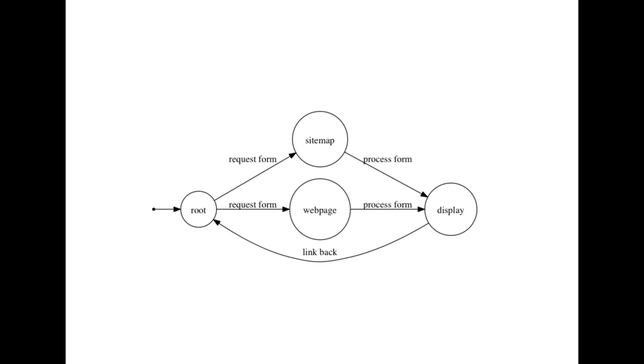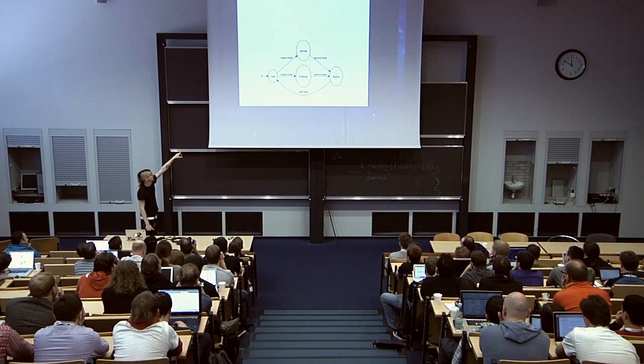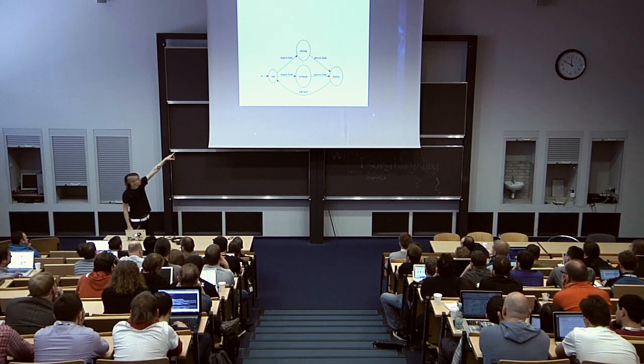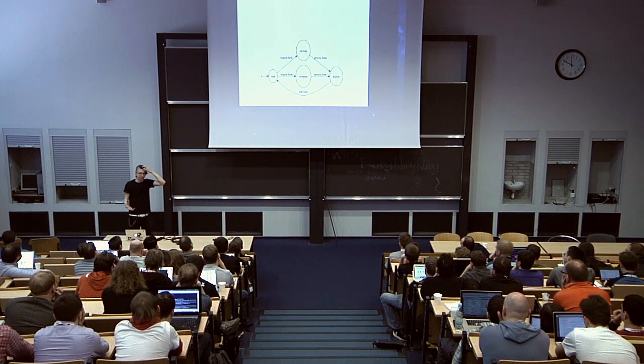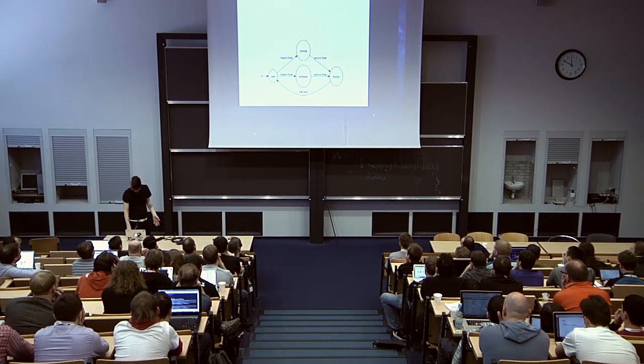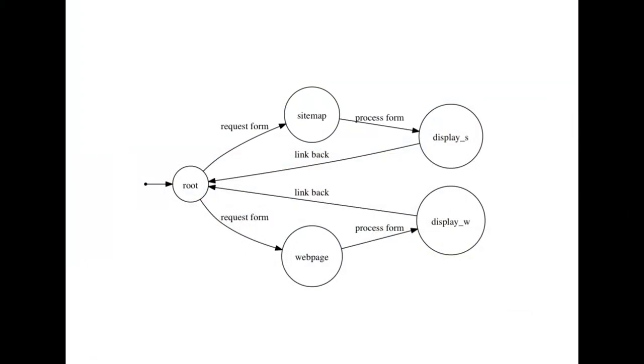If you think about it, there's essentially these two processes: web pages and site maps. Now we're going to build a state machine that encompasses these business processes. This is the first version I came up with. You start at the root, then you would request a form for the web page API. You'd process that form, then you'd get all the information back in the display. The display would contain a link back to the root. Same thing with the site maps. You'd request a form, fill it out, here's the website I'd like to build with this. You'd process it, it gives you the stuff and it comes back.